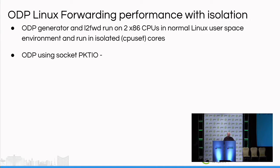The last thing we wanted to talk about is the ODP Linux forwarding performance with isolation. Unfortunately our colleague who did the work is not here. Just to give some background: L2 forward is a simple layer-two forwarding application. If you look in the DPDK examples, they include an L2 forward and an L3 forward application used for simple benchmark testing. We have created ODP versions of these tools.